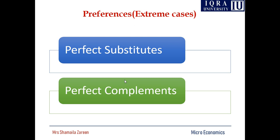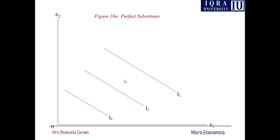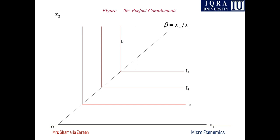There are some extreme cases of indifference curves — perfect substitutes and perfect complements. When indifference curves are perfect substitutes, you can see they are straight linear lines. In these straight lines, the marginal rate of substitution is constant — it is not falling. That is why this is called an extreme case of the indifference curve. When talking about the perfect complements case, the marginal rate of substitution is 0.